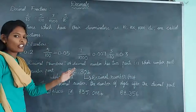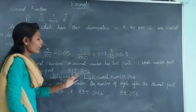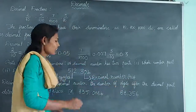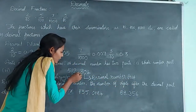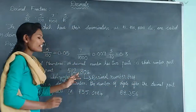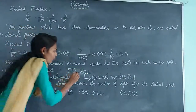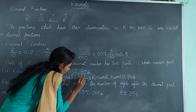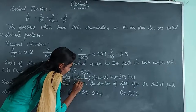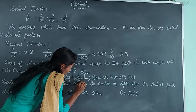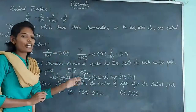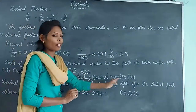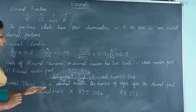512 is known as the whole number part and .804 is known as the decimal number part. Here we have a dot — this is called a decimal point, which separates the whole number part and the decimal number part.